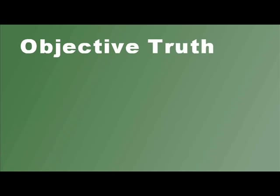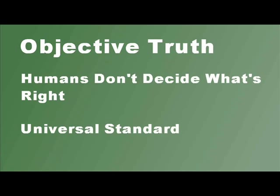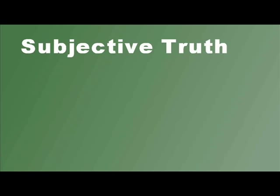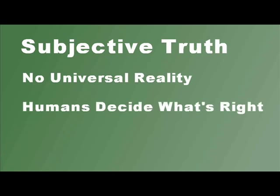Basically, objective truth means that we don't get to decide what's true or false for ourselves. There's a standard of truth outside of ourselves that we either accept or reject, and when we reject it, we lie to ourselves. Subjective truth is exactly the opposite — that there's no such thing as reality except what's inside each person's mind. Therefore, each person decides what's true for themselves.